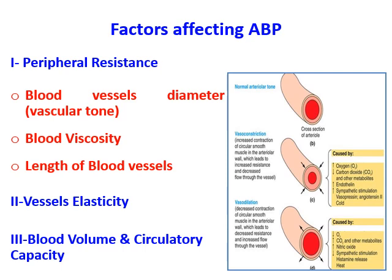In cases of vasoconstriction — decreased diameter — there is an increase in total peripheral resistance and an increase in arterial blood pressure. Factors that can cause vasoconstriction include: a drop in carbon dioxide level, an increase in oxygen level, presence of endothelin, sympathetic stimulation, chemical substances such as vasopressin or angiotensin II, or cold conditions.